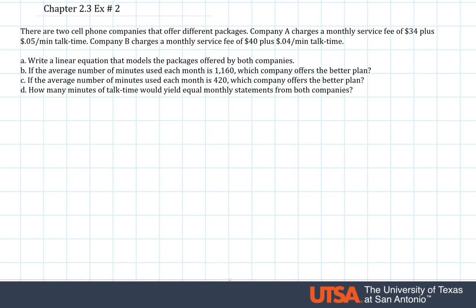Chapter 2.3 example 2 covers setting up a linear equation to solve a real-world application. The question asks: there are two cell phone companies that offer different packages. Company A charges a monthly service fee of $34 plus 5 cents per minute talk time. Company B charges a monthly service fee of $40 plus 4 cents per minute talk time.